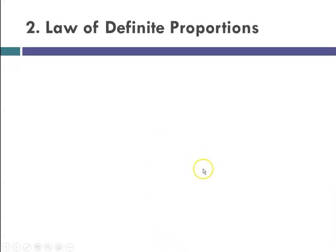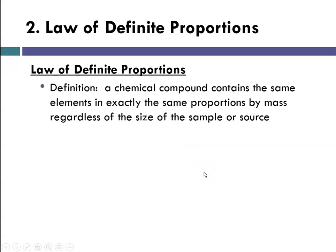The second law was the law of definite proportions. That states that a chemical compound contains the same elements in exactly the same proportions by mass, regardless of the size of the sample.